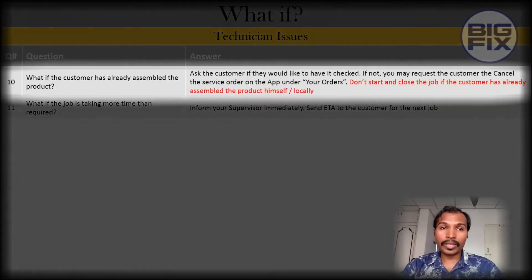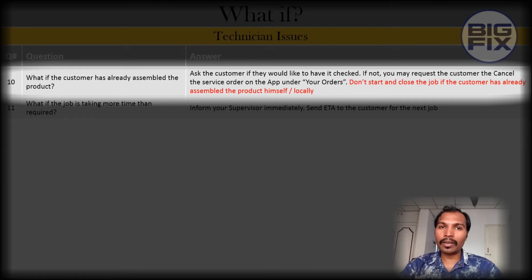What if the customer has already assembled the product? Ask the customer if they would like to have it checked. If not, you may request the customer to cancel the service order on the app. Don't start or close the job if the customer has already assembled the product himself or locally.